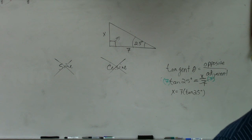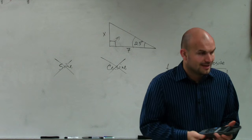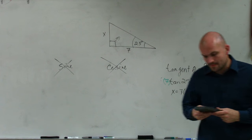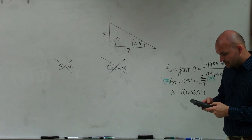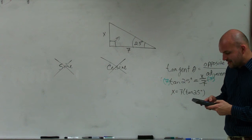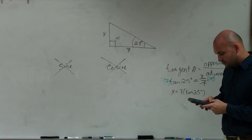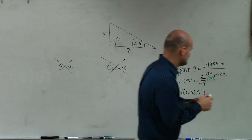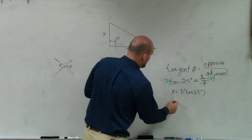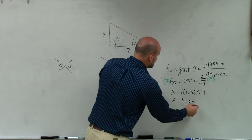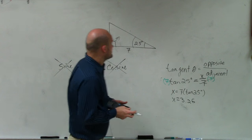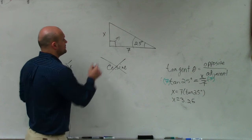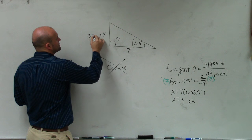So what I'll simply do in my calculator is I'll type 7 times the tangent of 25 degrees. I'm going to round to the 100th. And therefore, x is going to equal 3.26. So the length of x is equal to 3.26.